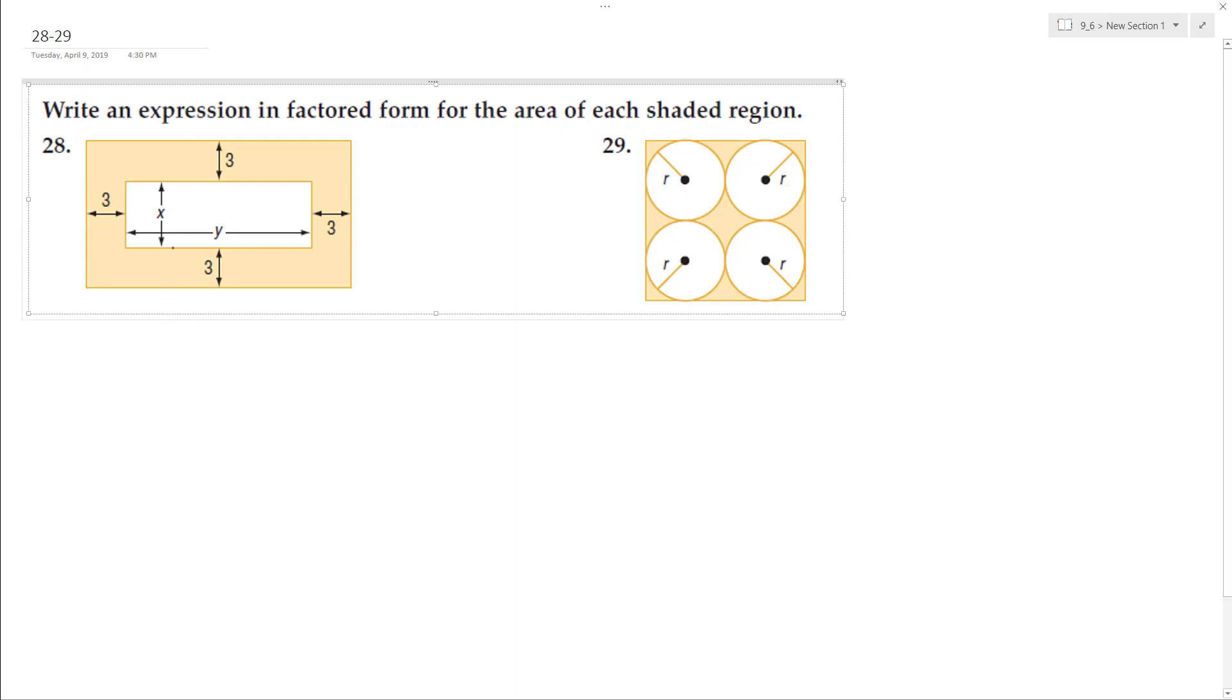So for this first one, if you look here, I know this length wise, so 3 and 3, and then the width is y, so it's going to be 6 plus y. And then the height is going to be x plus 3 plus 3, so 6 plus x.